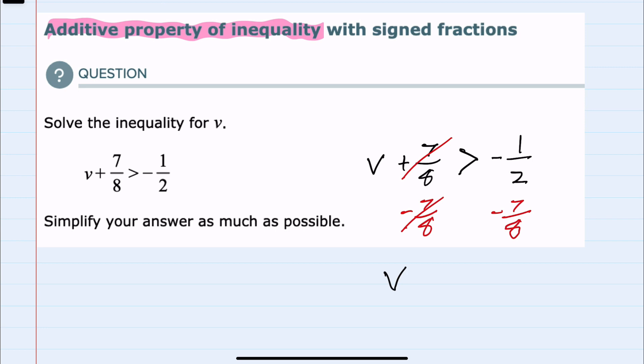When we add or subtract, the direction of the inequality does not change. I just need to combine these fractions on the right-hand side, and I'll do so by getting a common denominator here of 8.